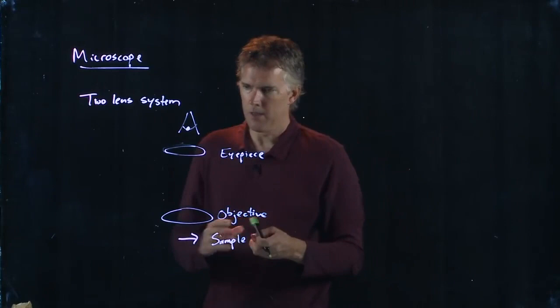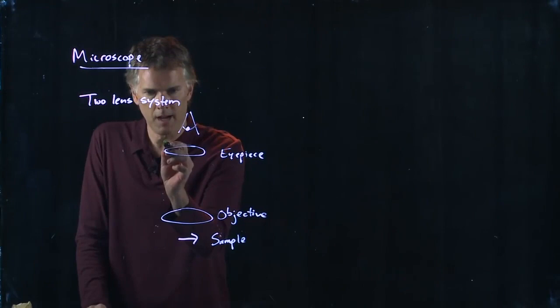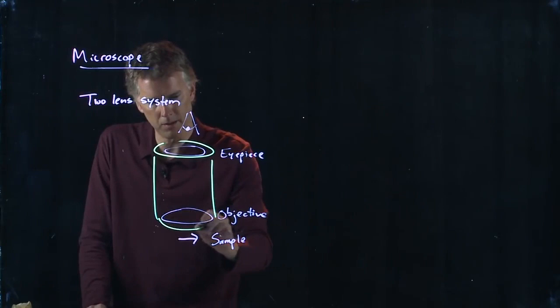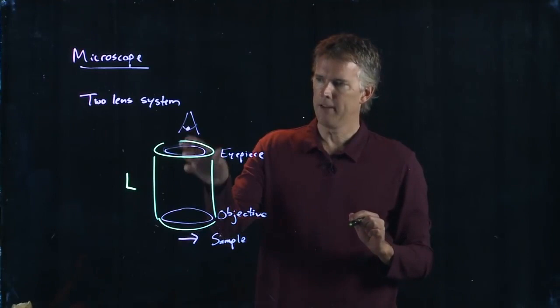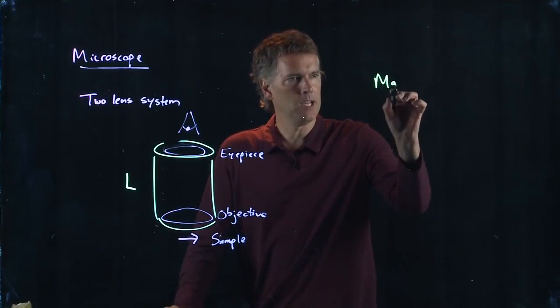Now, there is some sort of housing between this stuff and that housing has a particular length associated with it and that length is given by L. And then there is a focal length for the objective and a focal length for the eyepiece and we would like to know what is the magnification of the whole system.